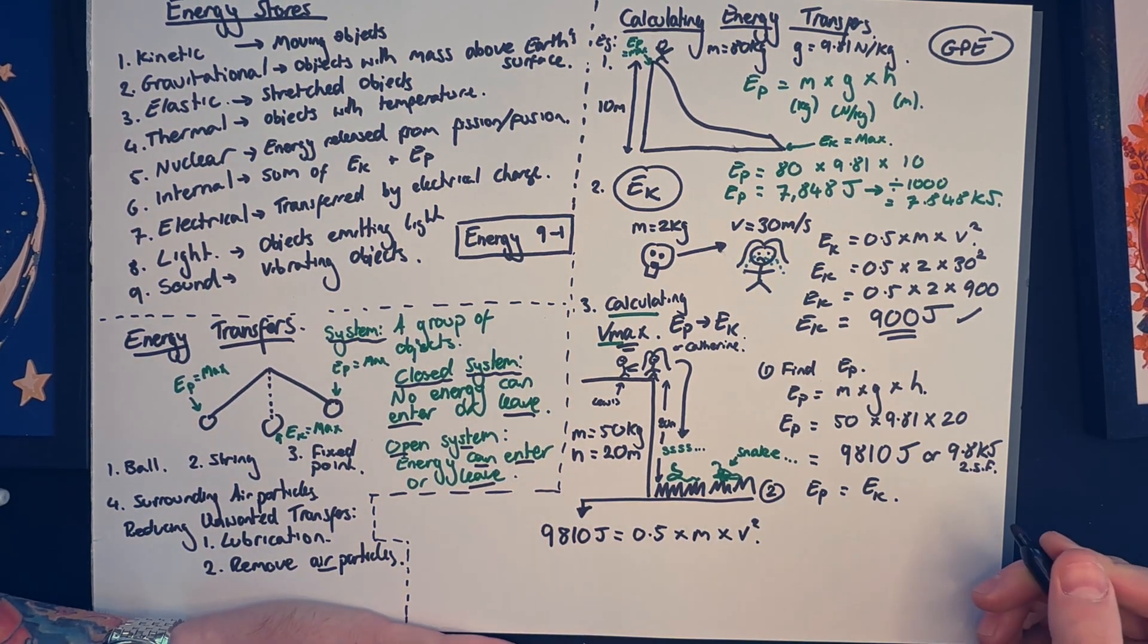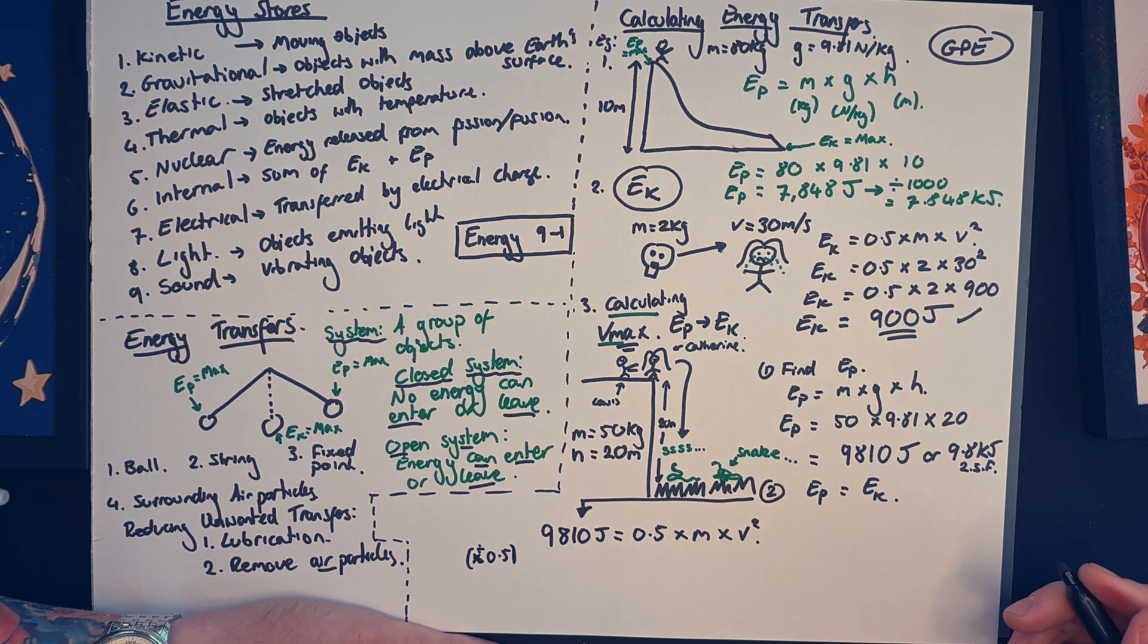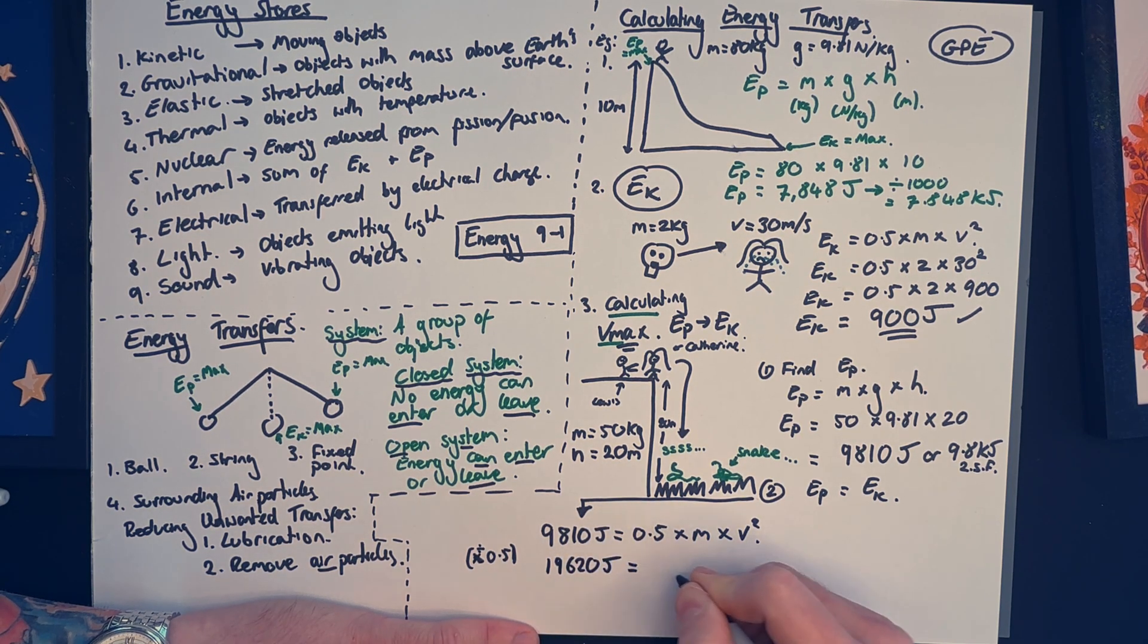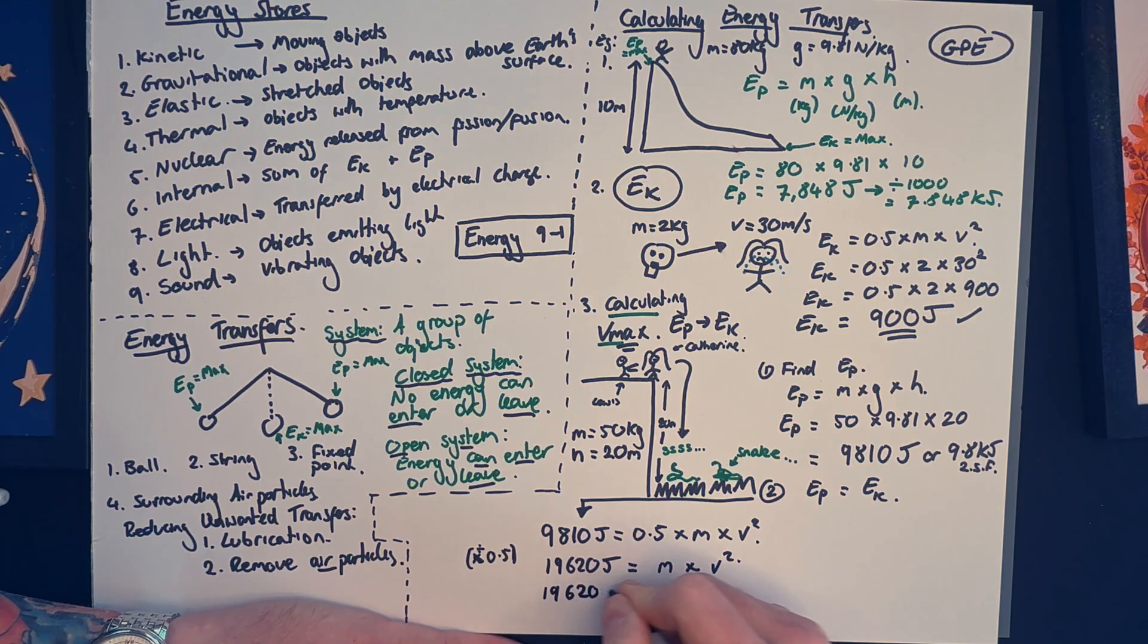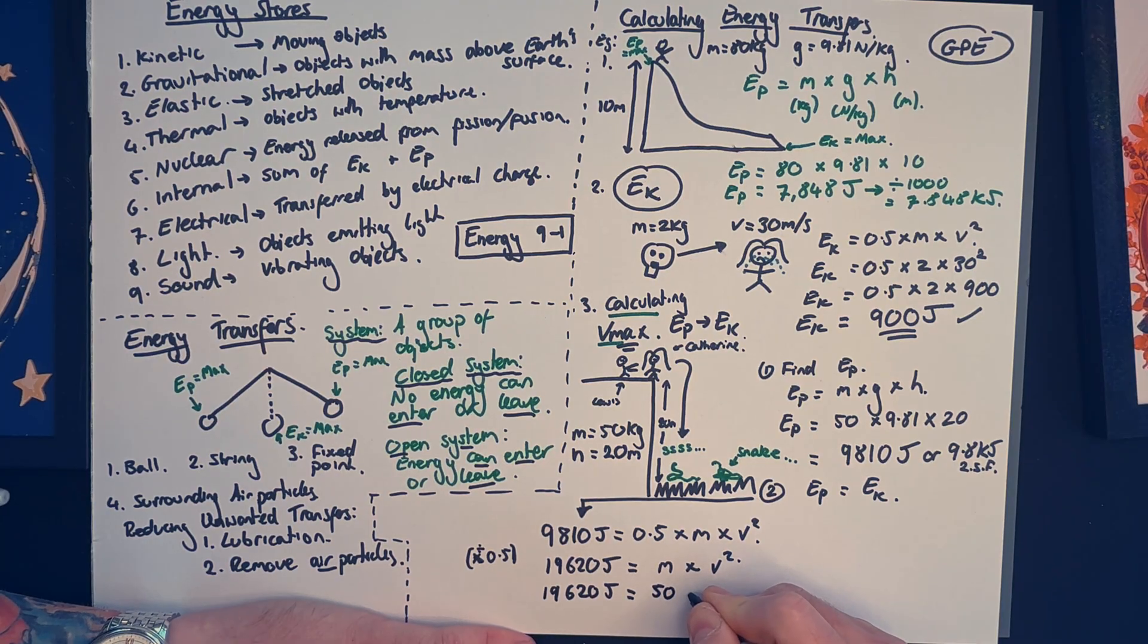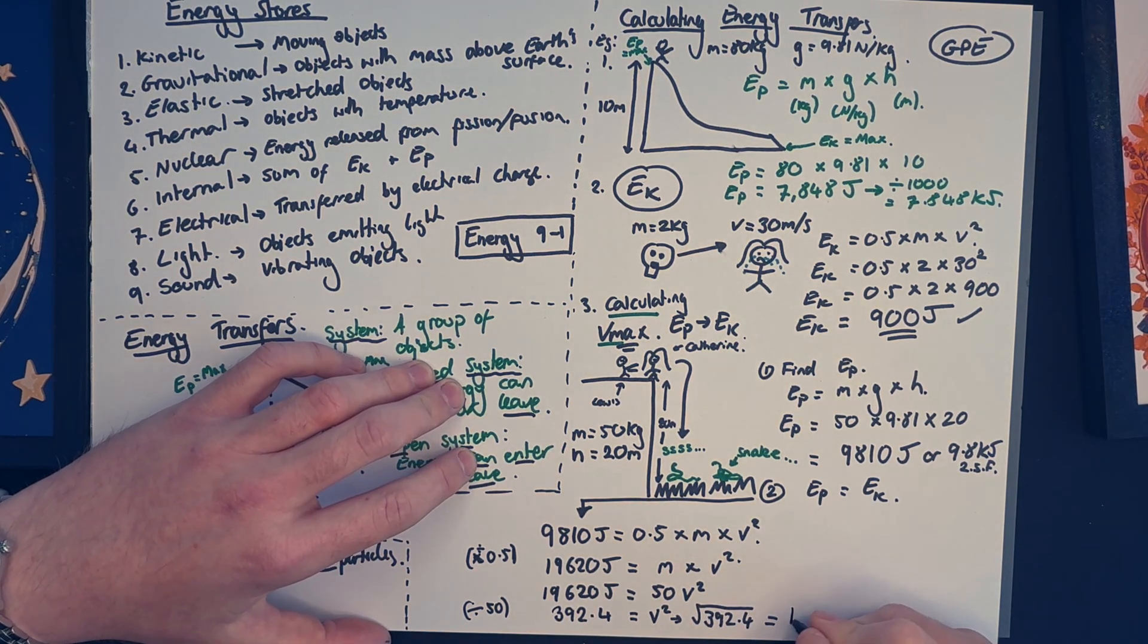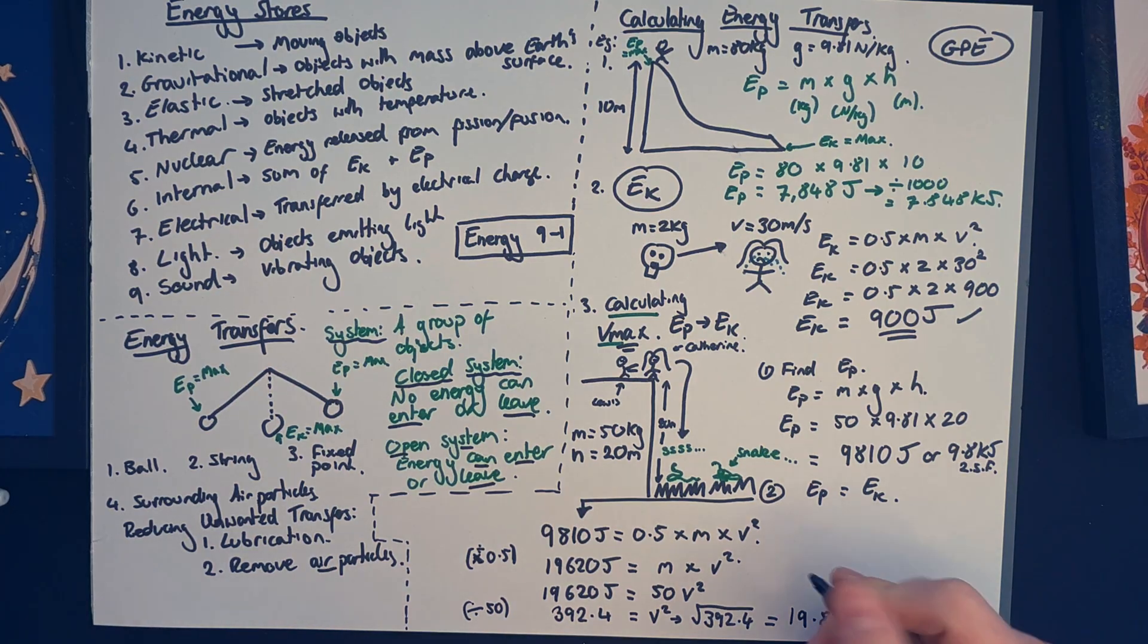So 9,810 joules is now equal to half times by the mass times by velocity squared. Step one, I'm going to divide both sides of the equation by one half. Now that's going to be the same as timesing by two, so that's why the number changes from 9,810 to 19,620 joules. In the next step, I make that equal to mass times velocity squared. The step after that, you'll see that I substitute the mass back in, that was 50. So 19,620 joules is equal to v squared. And then finally, dividing 19,620 by 50 gets me down to 392.4. Remember, that's equal to v squared though, so I just need to do one more itsy weensy step, and that is square root both sides.